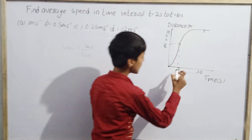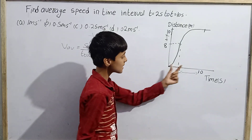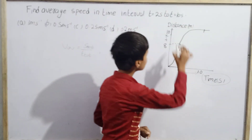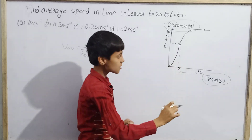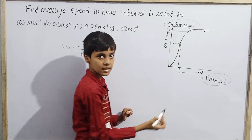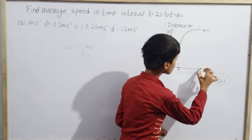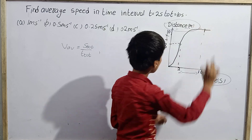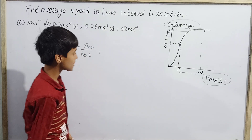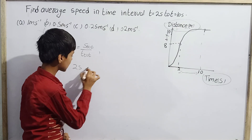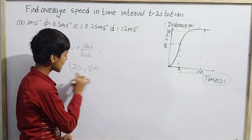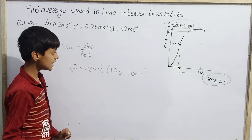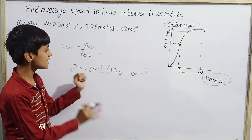At t = 2 seconds, the particle has covered 8 meters. At t = 10 seconds, it has covered 10 meters. So at 2 seconds it covers 8 meters, and at 10 seconds it covers 10 meters.